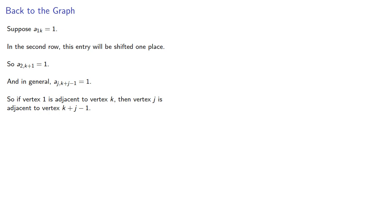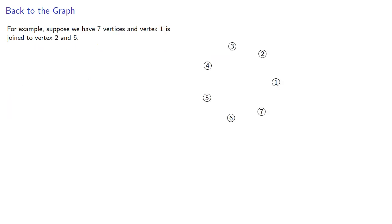And again, if this is hard to follow, remember, concrete never hurts. Let's look at a specific example. For example, suppose we have 7 vertices and vertex 1 is joined to vertices 2 and 5. We'd get a circulant graph if vertex 1 plus 1, which is 2, is joined to vertices 2 plus 1, which is 3, and 5 plus 1, which is 6.